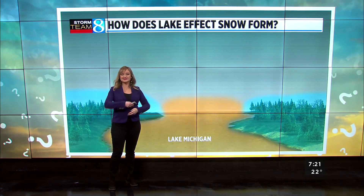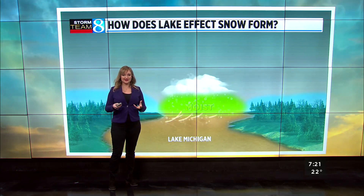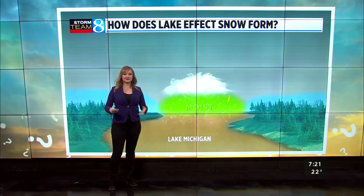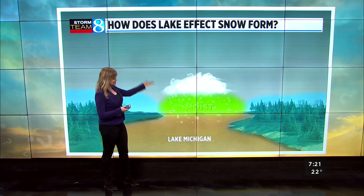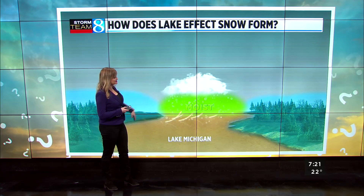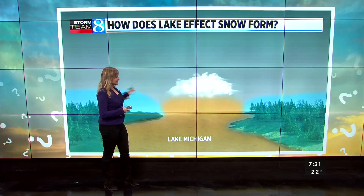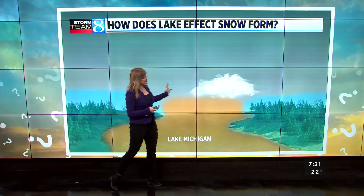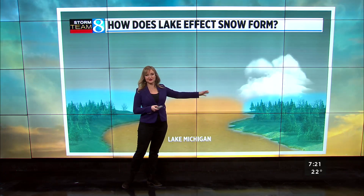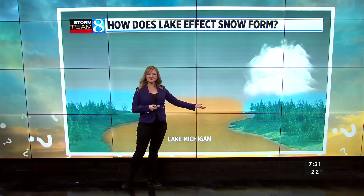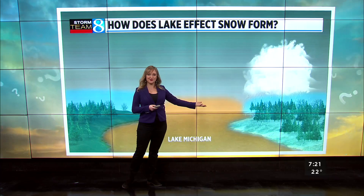This immediately forms a cloud. That cloud can get strong enough and big enough that it starts to produce some snow, and the wind continues to carry it, usually to our shore, where it drops lake effect snow.